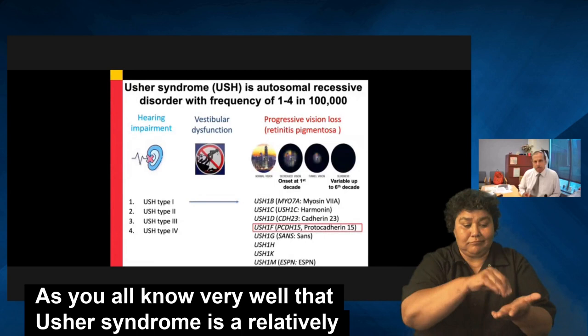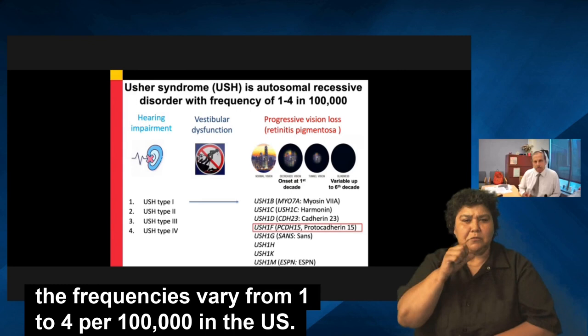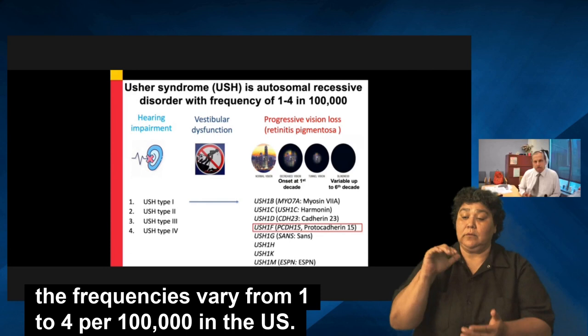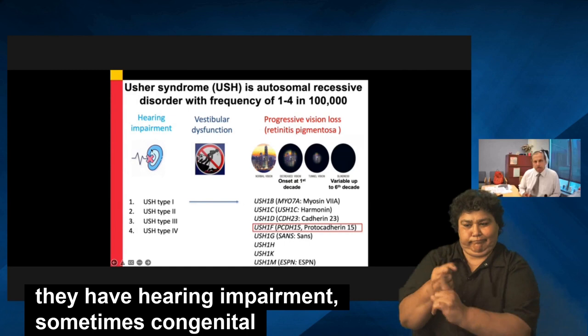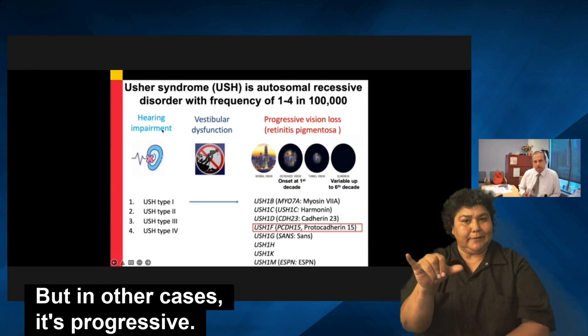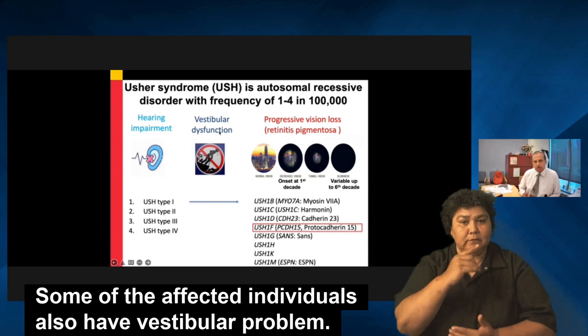As you all know, Usher syndrome is a relatively rare disorder, and depending upon the studies, the frequency varies from 1 to 4 per 100,000 in the U.S. Almost all of the Usher subjects have hearing impairment — sometimes congenital when it's Usher syndrome type 1, but in other cases it's progressive.